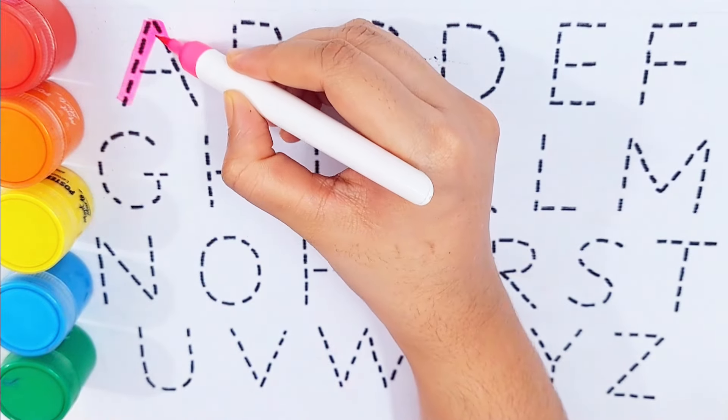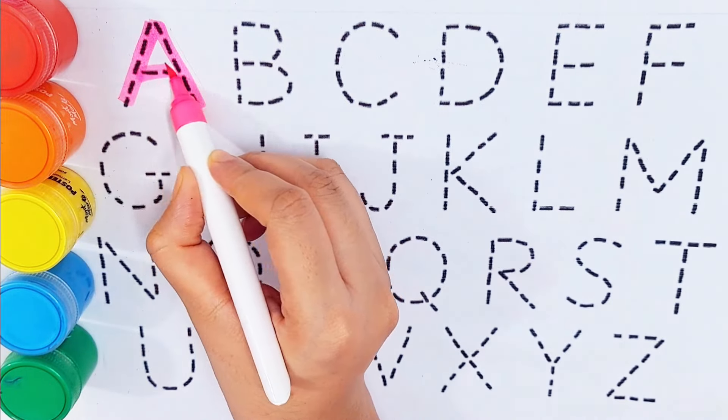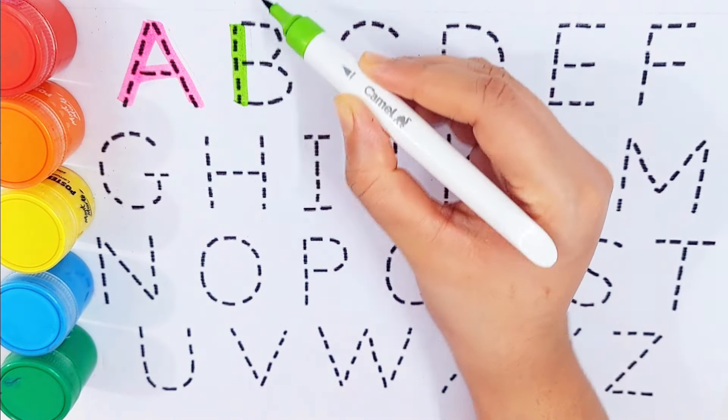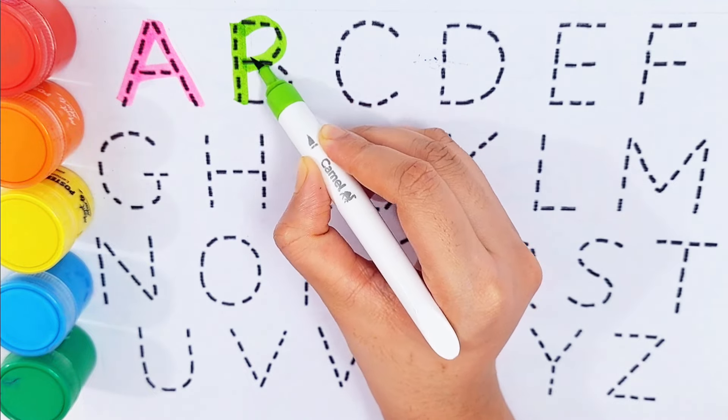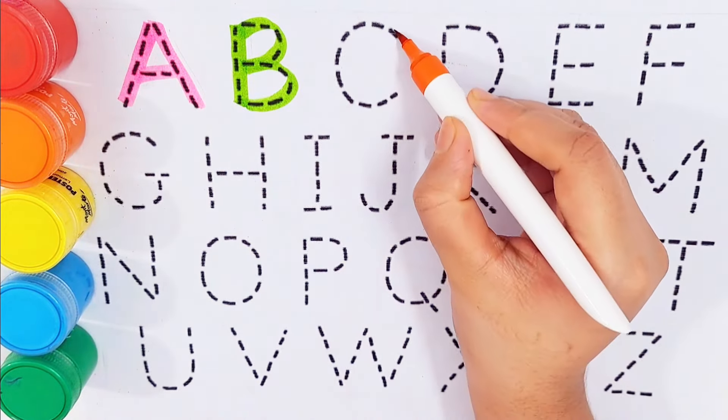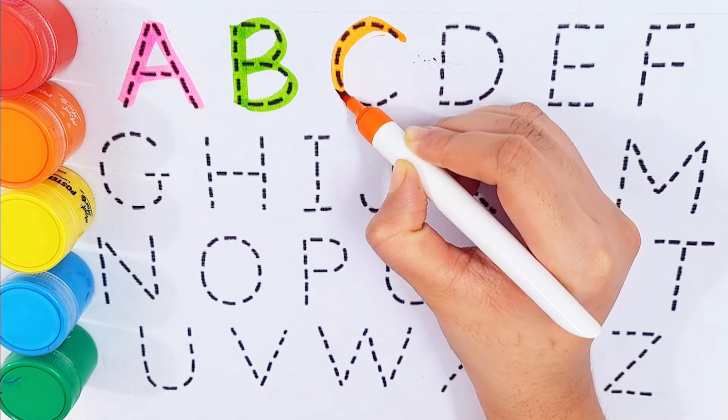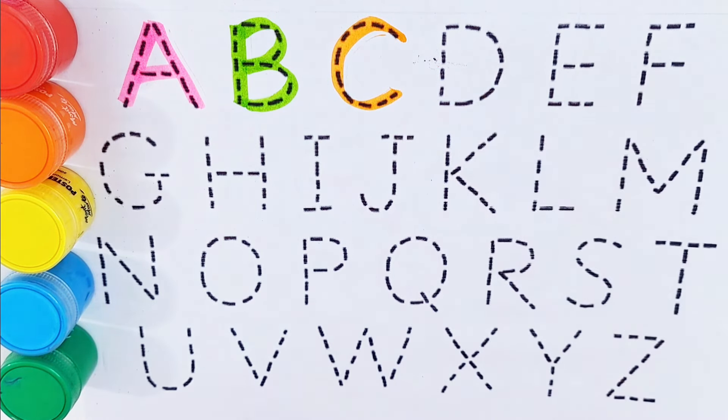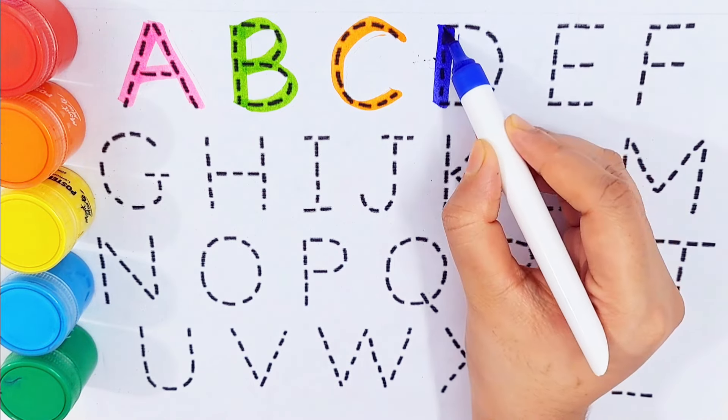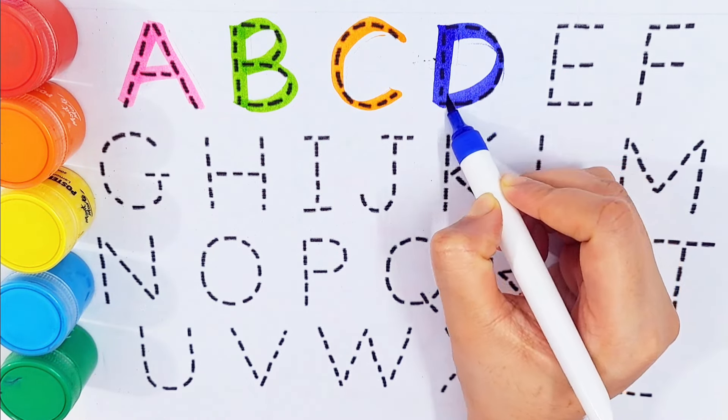Pink color, A for ant. Light green color, B for butterfly. Orange color, C for candy. Dark blue color, D for door.